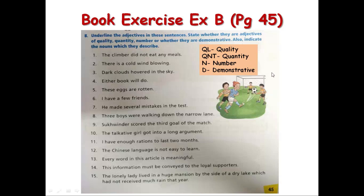This format is only for your book. Let's start with the first sentence: 'The climber did not eat any meals.' The adjective is 'any', the noun it describes is 'meals', and the kind of adjective is quantity — so we write QT just above the adjective. Similarly, underline the adjective, circle the noun. Follow the rules very clearly.